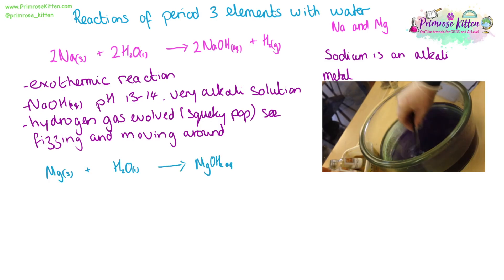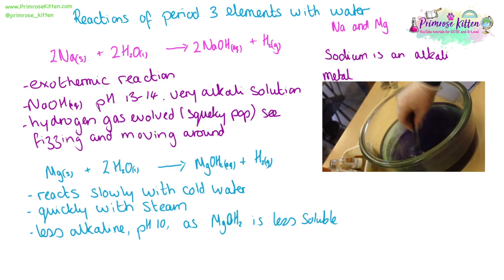Magnesium will react with water to give us magnesium hydroxide and hydrogen gas. This is a much less impressive reaction. It will react slowly with cold water, but quickly with steam. It will still be alkaline, but less alkaline solution will be produced, roughly pH 10, as magnesium hydroxide is less soluble in water.